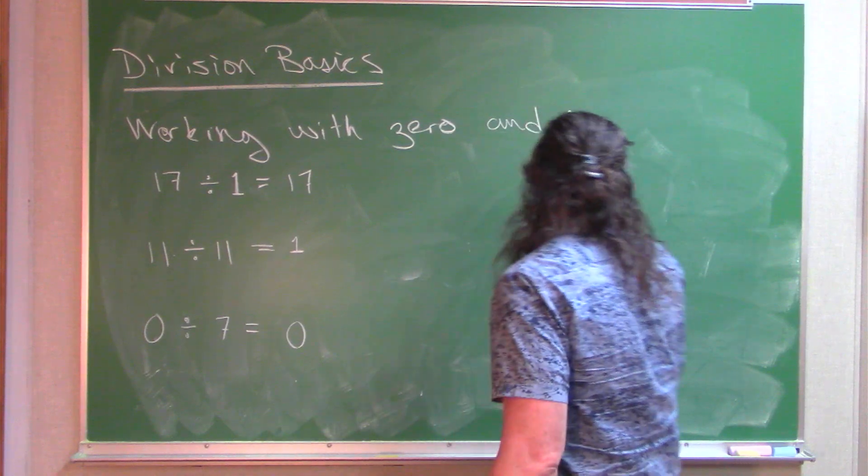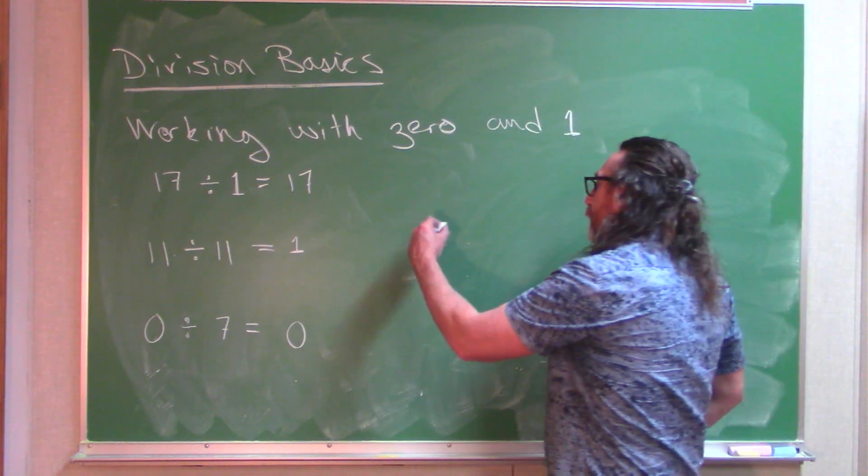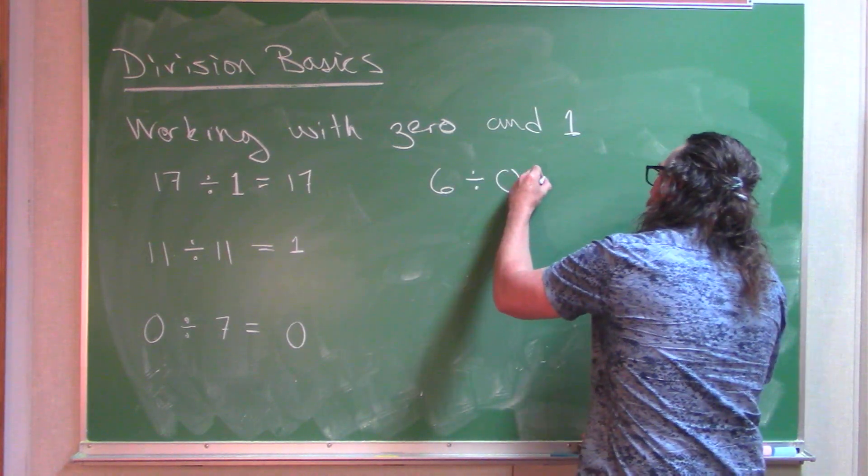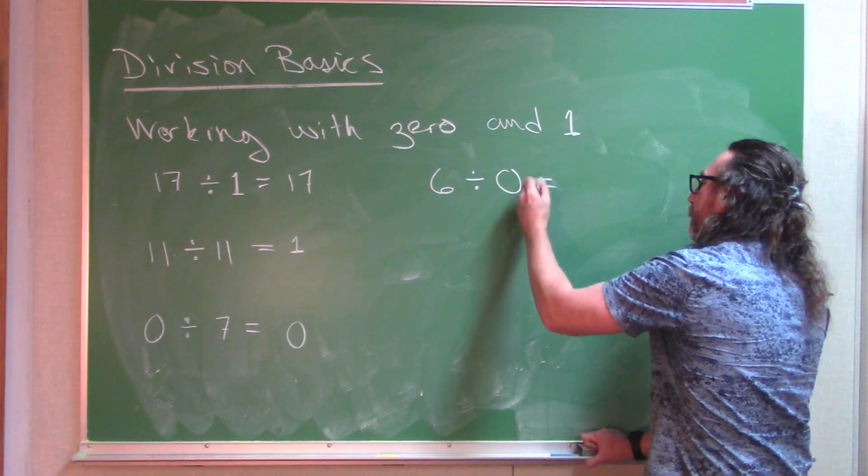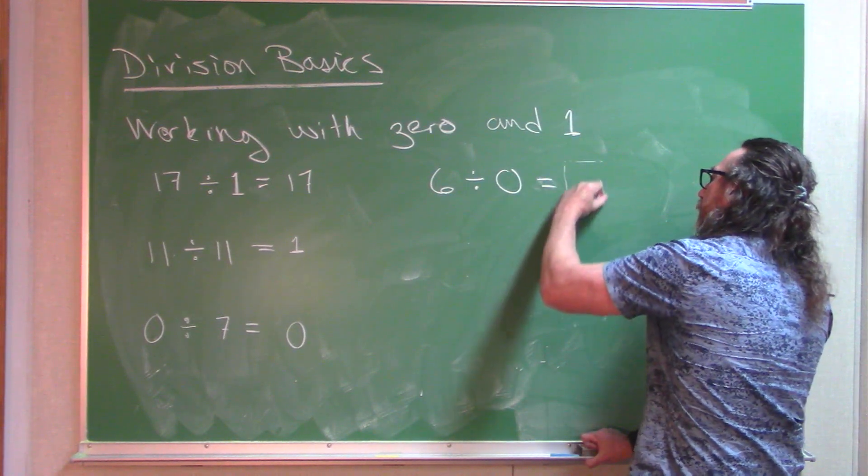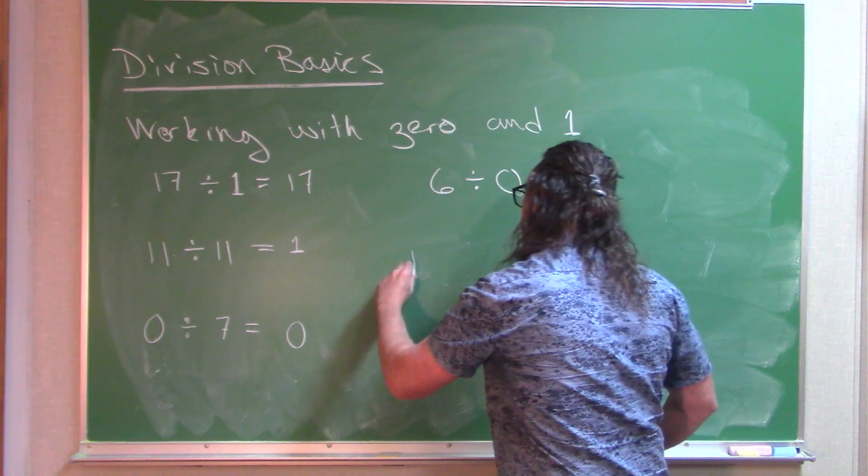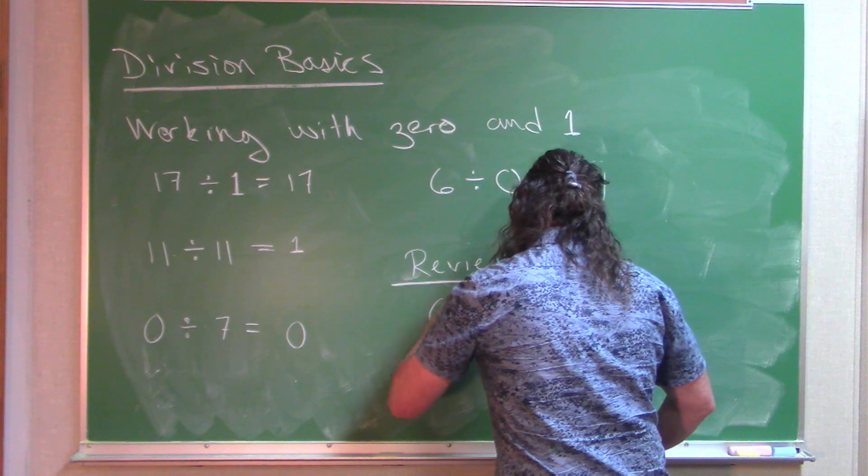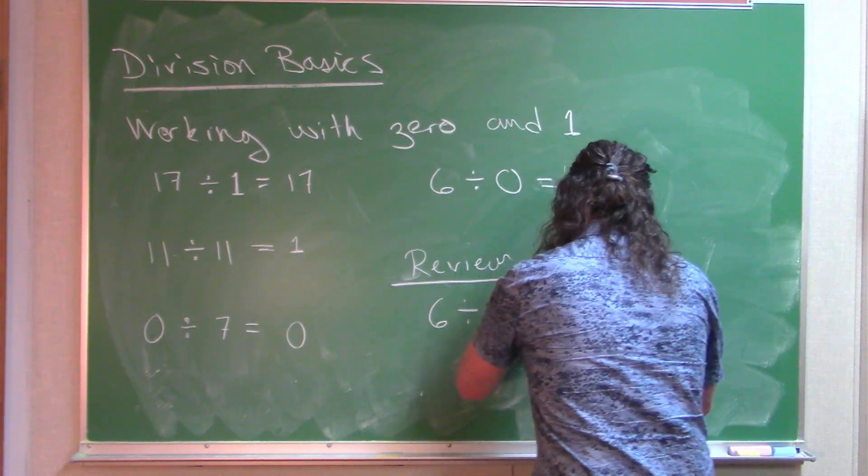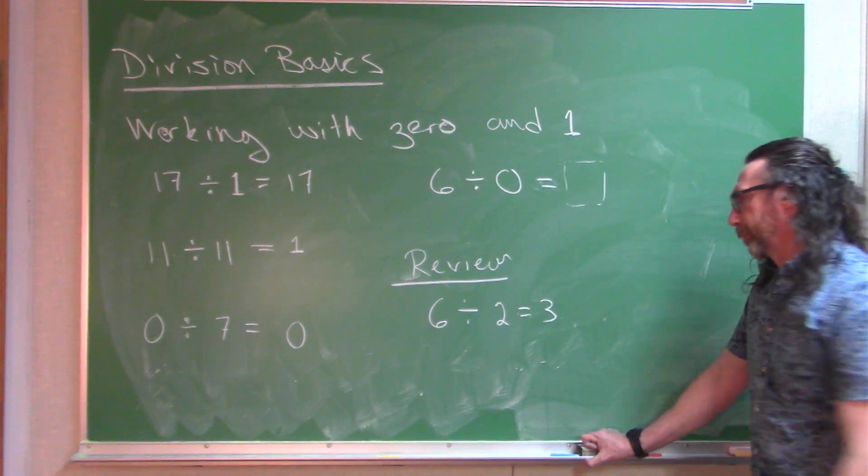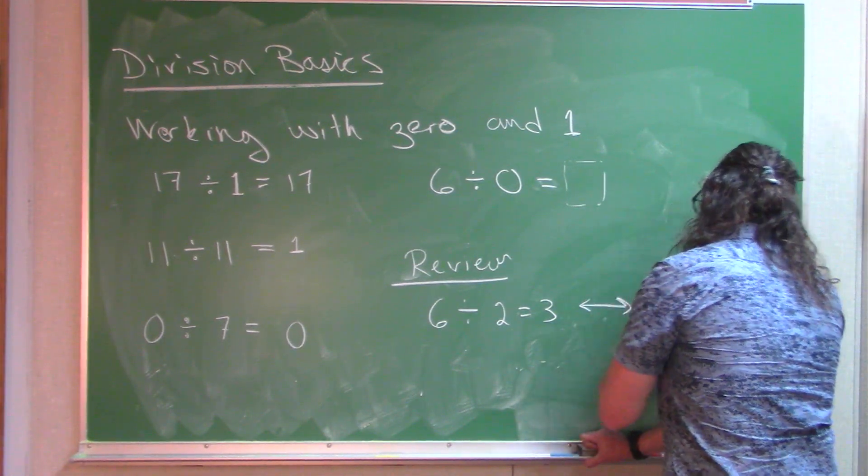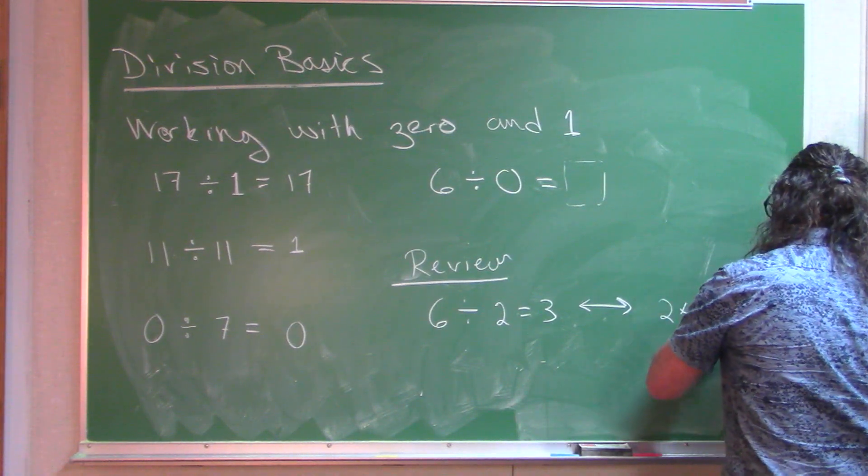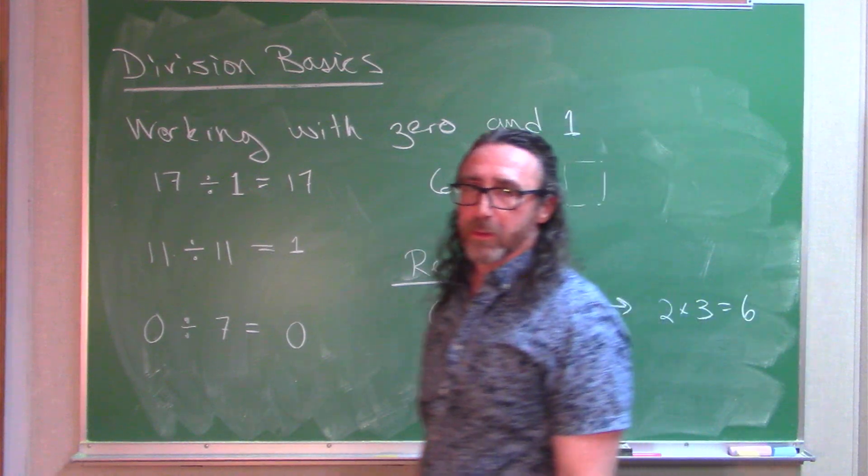Having a 0 as the divisor, on the other hand, that actually works out a little weird. Let me show you. Let me try this. If I had 6 divided by 0, what would this be? Well, let's talk about something a little more familiar before we get to that. 6 divided by 2. We know that. 6 divided by 2 is 3. And this division fact is true because 2 times 3 equals 6.